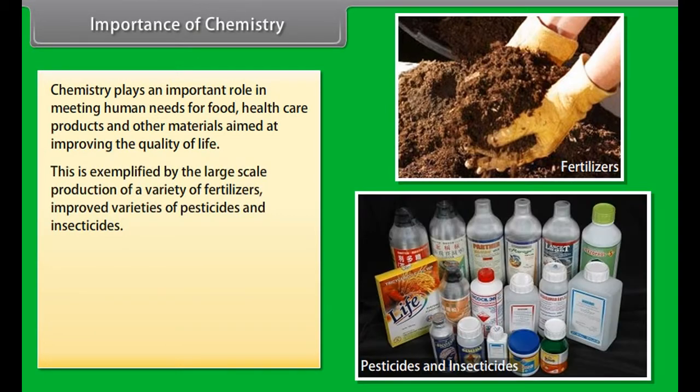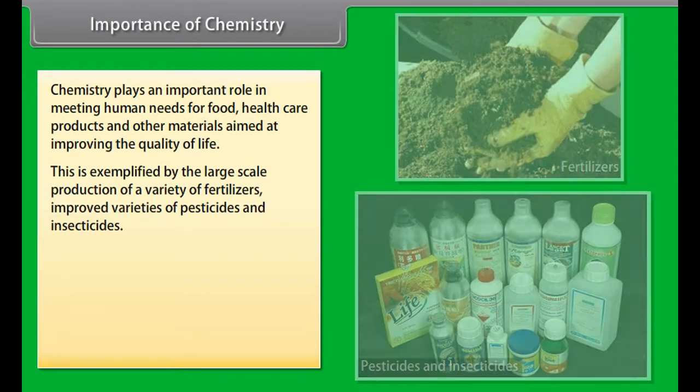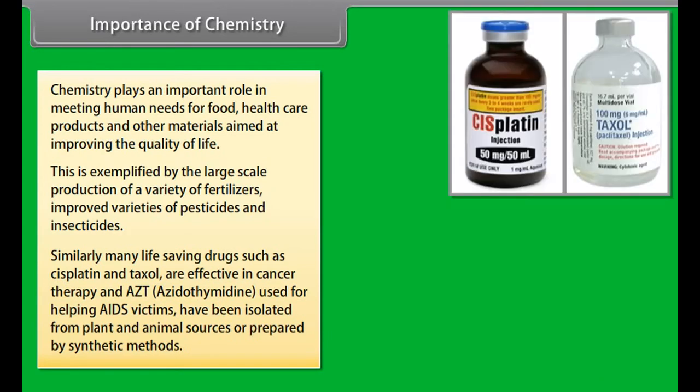Differentiate between precision and accuracy. Importance of chemistry: Chemistry plays an important role in meeting human needs for food, healthcare products and other materials aimed at improving the quality of life.